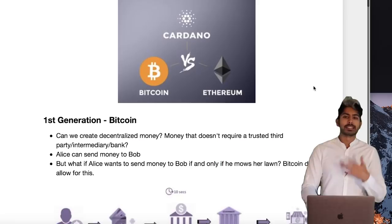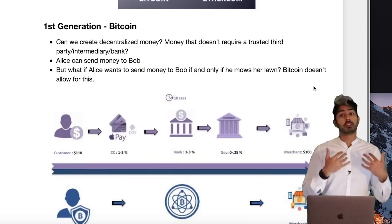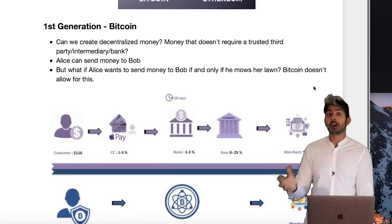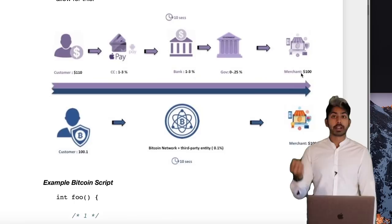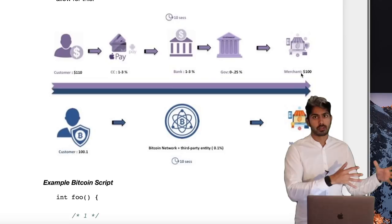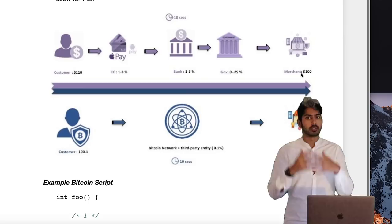Bitcoin allows Alice to send money to Bob without needing a trusted third party. The traditional way to do this involved a bank, a clearinghouse, the ACH network — all these different networks that were pre-internet. So it takes some time for Alice to send money to Bob if he's in a different country because it's requiring all these old-world protocols.